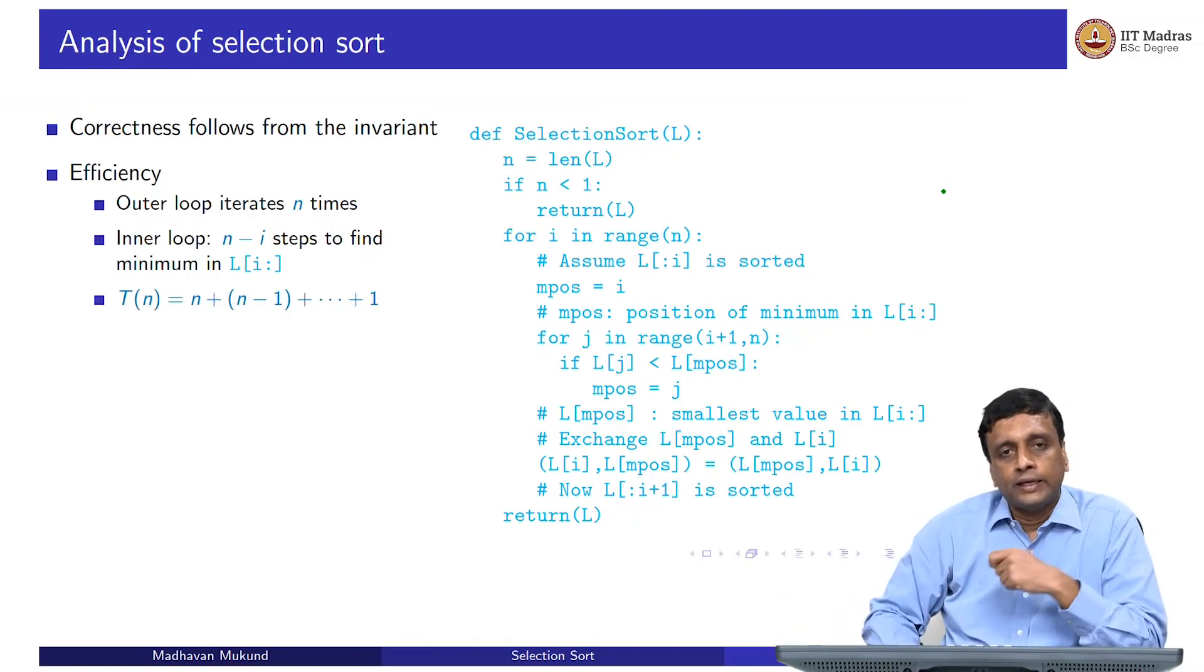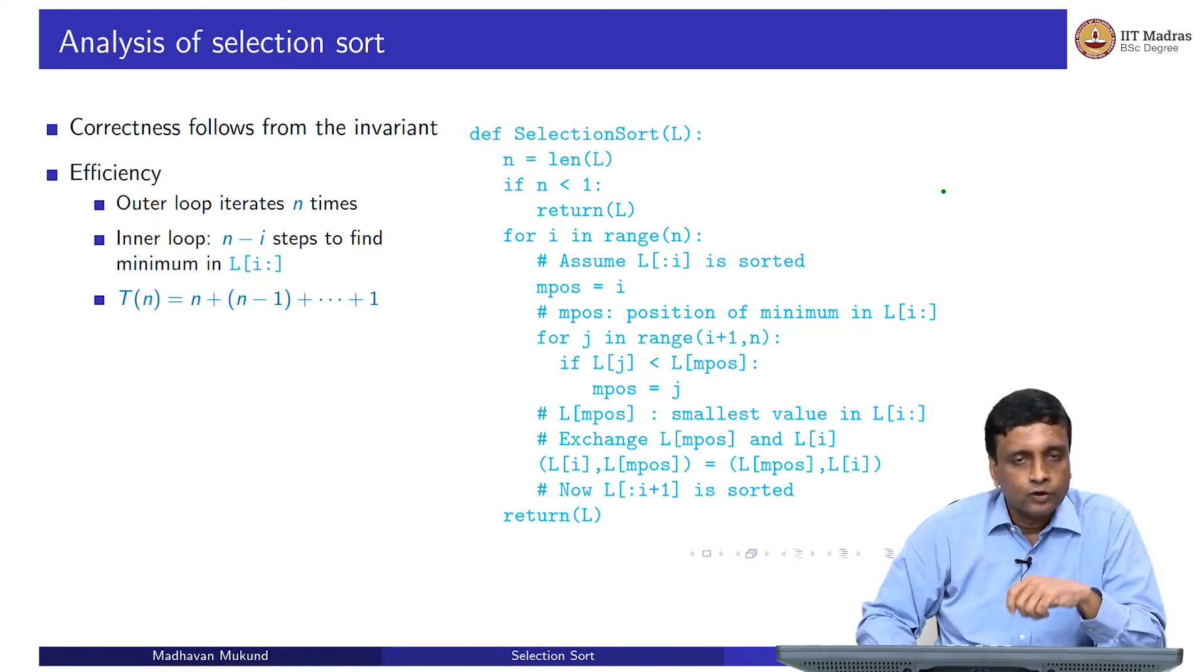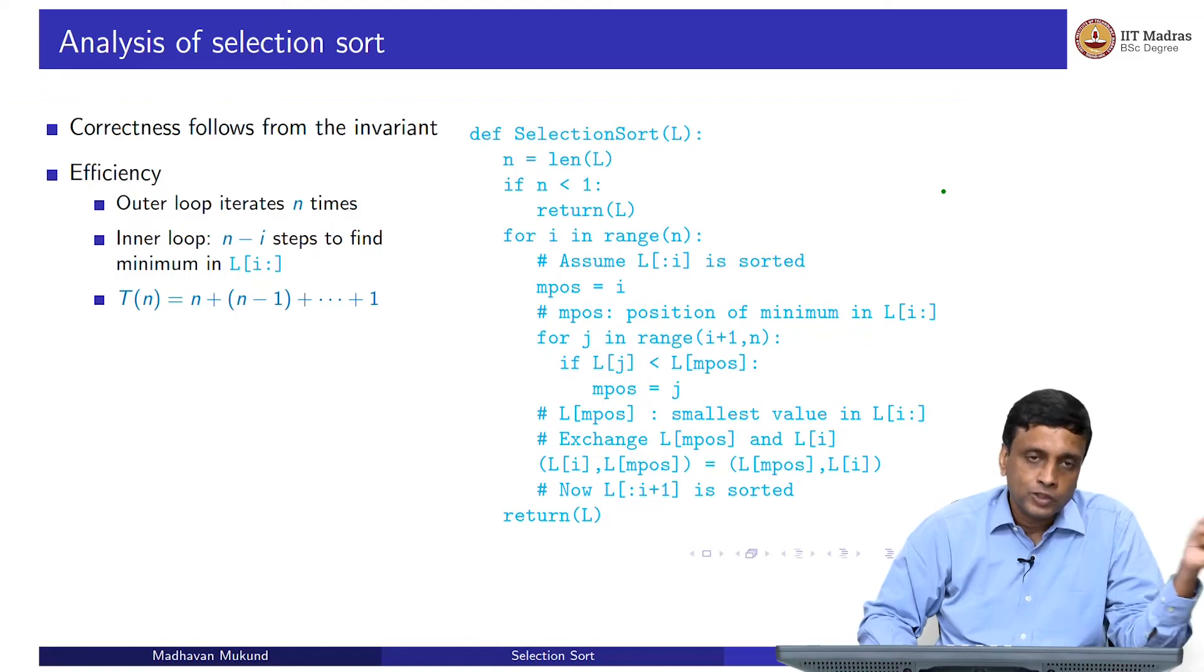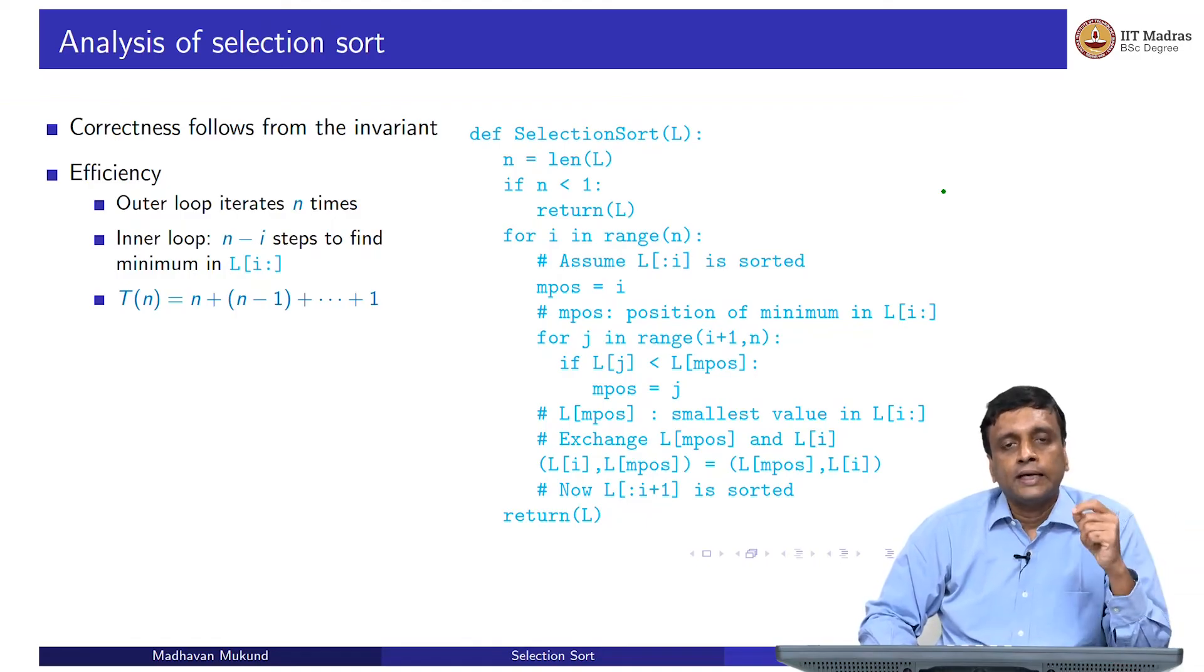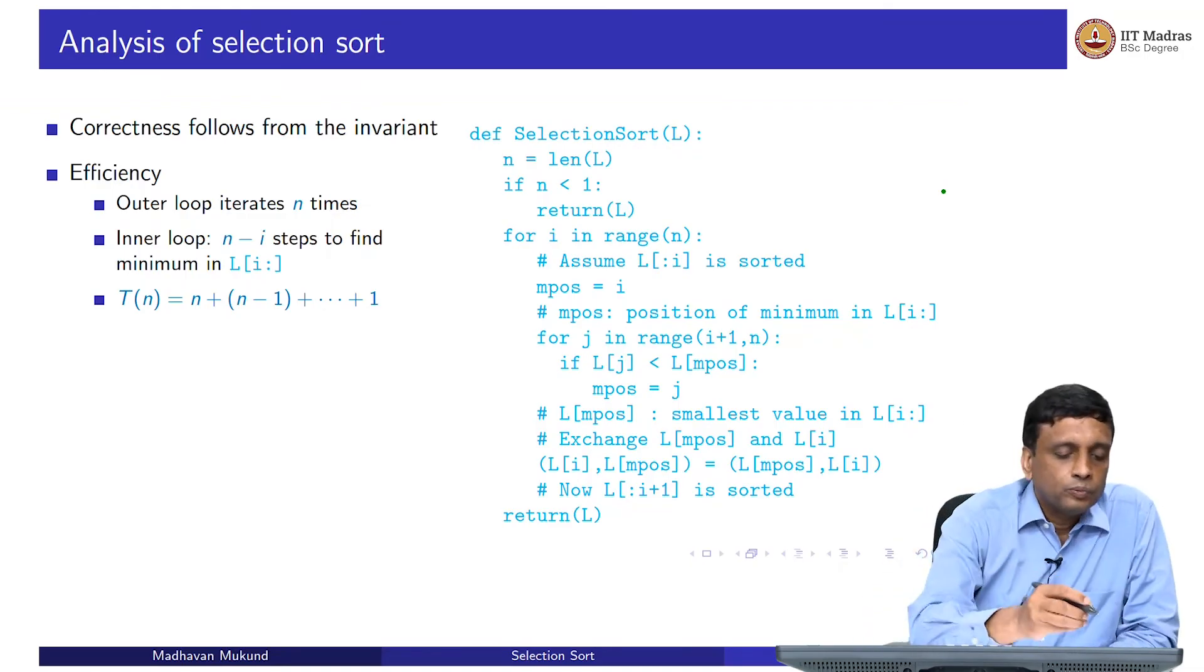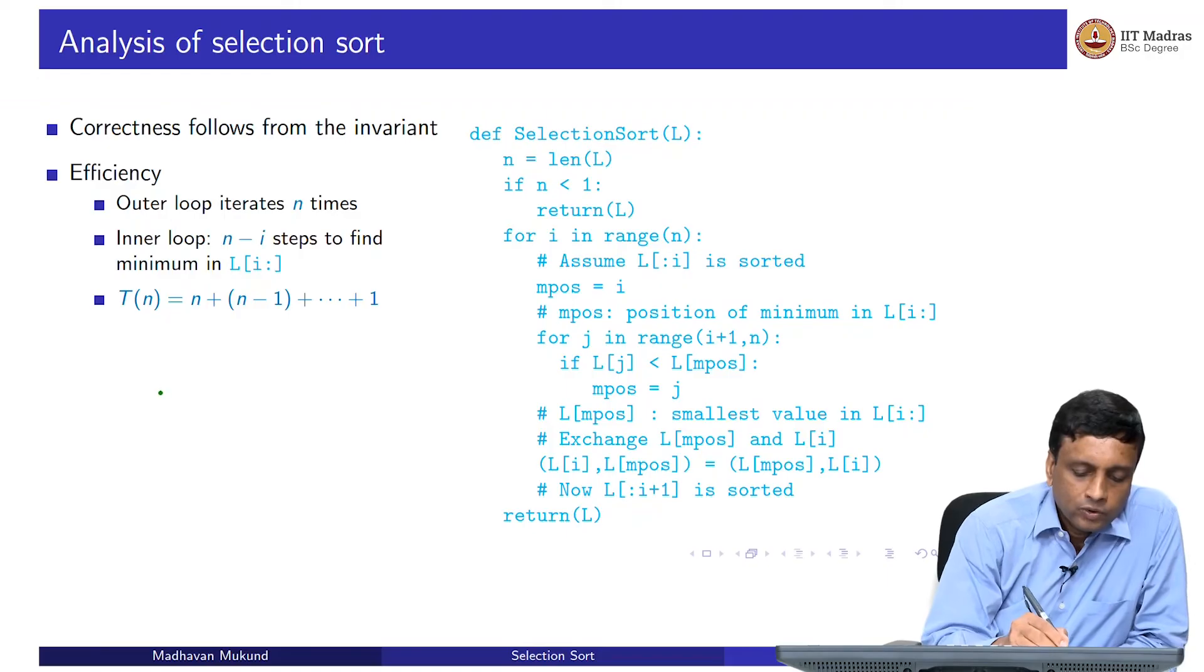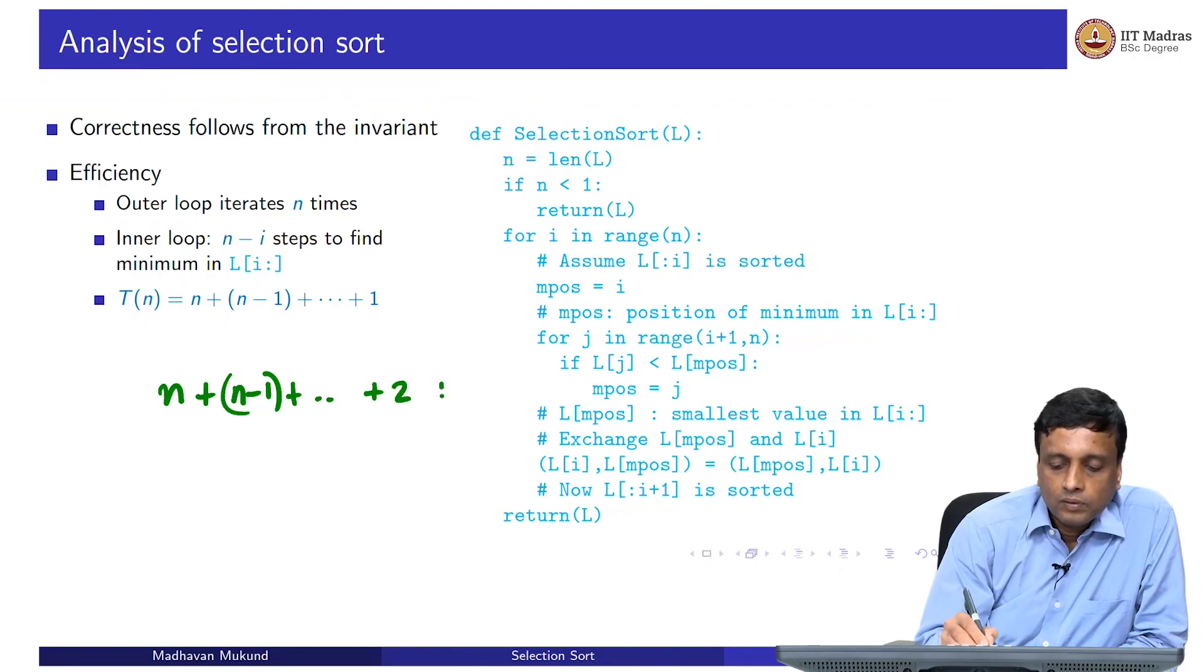I am going to initially go through n elements to find the absolute minimum and bring it to the first position, then I am going to go through n minus 1 elements, find the minimum, bring it to the second position and so on. The total time the algorithm is going to take is n plus n minus 1 plus plus up to 1. You should probably know what this adds up to, but in case you do not, here is a simple way to do it.